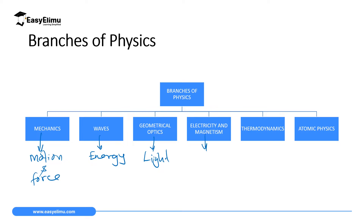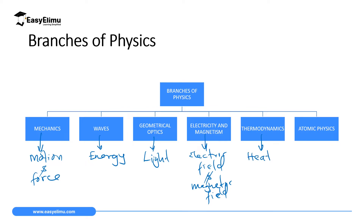The fourth branch is electricity and magnetism, where we discuss electric fields and how electric fields are related to magnetic fields. The fifth branch is thermodynamics, where we study heat and how heat can be transformed from one form to another. Finally, we will discuss atomic physics, where we study the smallest particle of an element — the atom — and the accompanying energy changes.